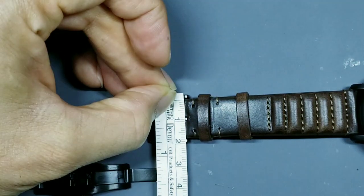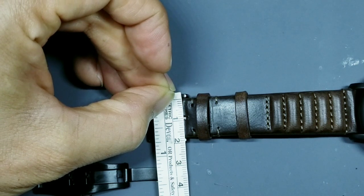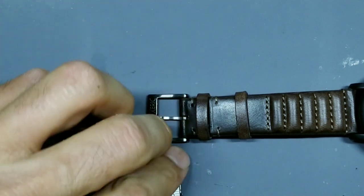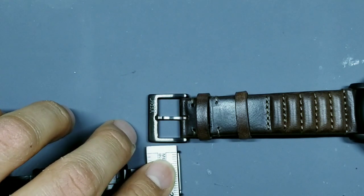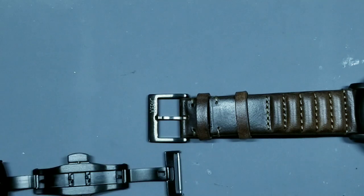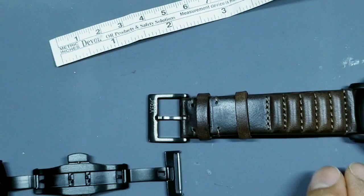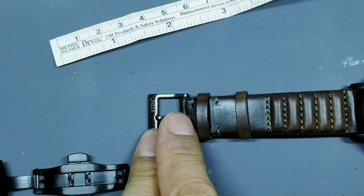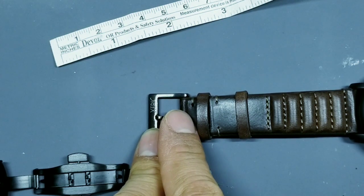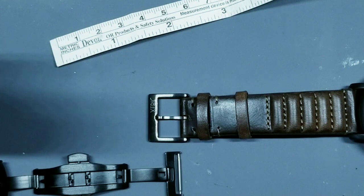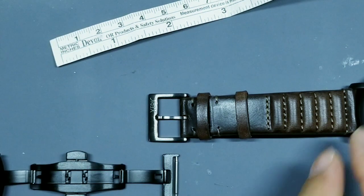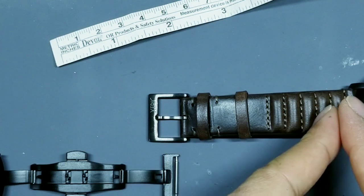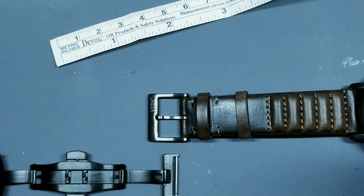And then on my dual deployant here, it is 18 millimeters as well. So that's how you want to size it. Again, if you are unable to measure your watch buckle end in advance, let's say you ordered a strap and you're waiting for it to be delivered, but you want to order this at the same time, if you want to risk it, the rule of thumb is your lug width or your bandwidth minus two millimeters. Not a hard and fast rule, but in my experience, that's usually what I find.